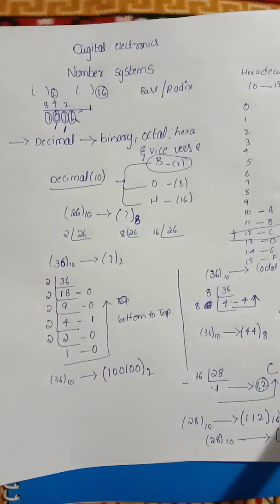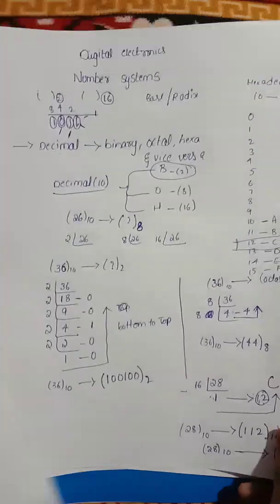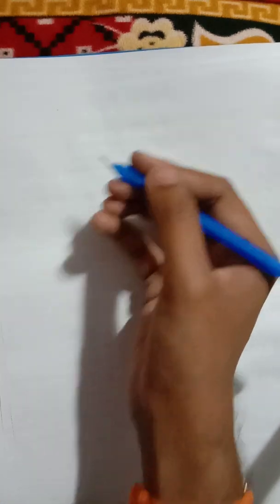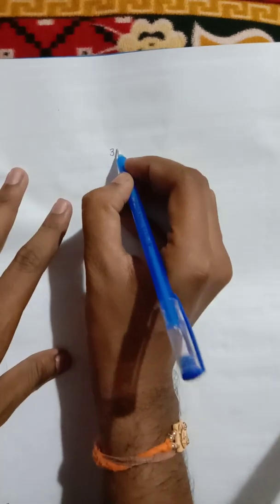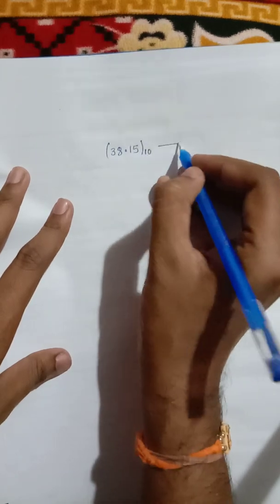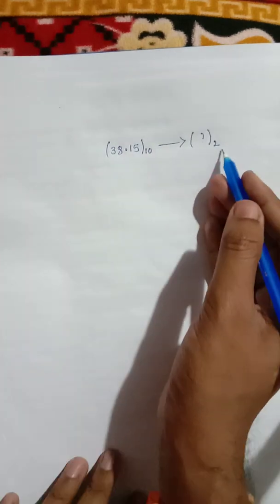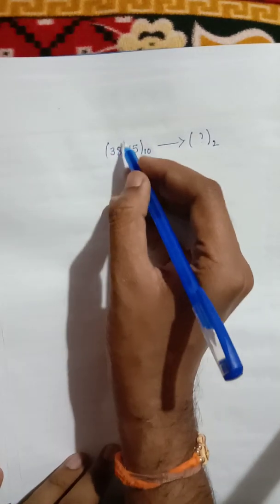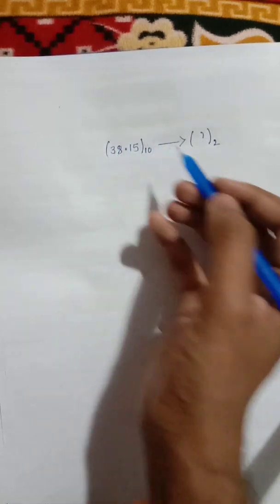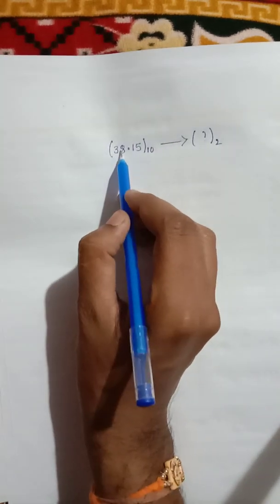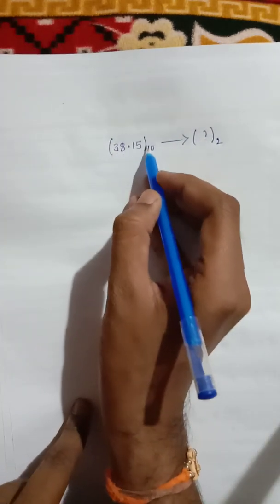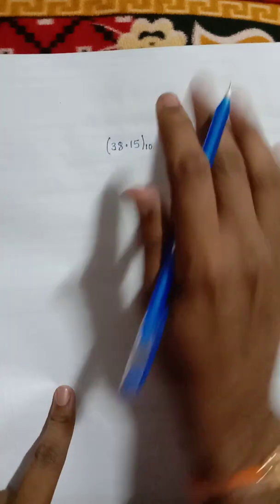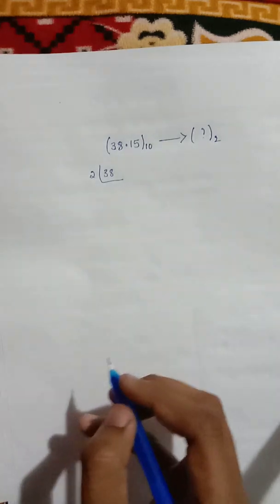Decimal to any other number system conversion is complete. Now if you want to handle a fractional number like 38.15, you convert the integer part 38 by dividing by 2 as before. For the fractional part 0.15, instead of dividing, you multiply by the base. So 0.15 multiplied by 2 gives 0.3; carry the integer part of the result.